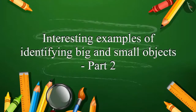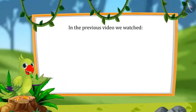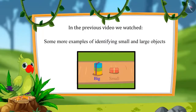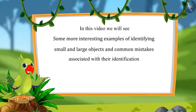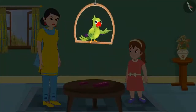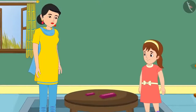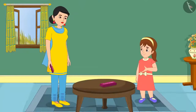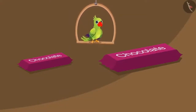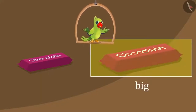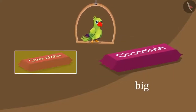Today Chotu and Pinky's maternal uncle brought two chocolates for them. Pinky said, 'Mom, give me one of these chocolates please.' She then said, 'Mom, I want a big one because this one is too small.' Children, here are the two chocolates — can you tell which one Pinky wants? Out of these two, this chocolate is bigger, so she wants this one. And this chocolate is smaller than the other.